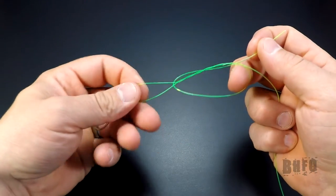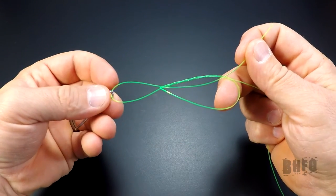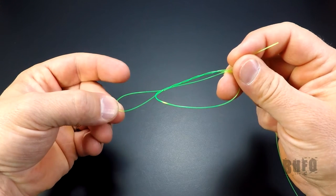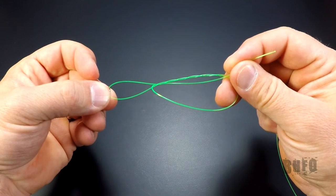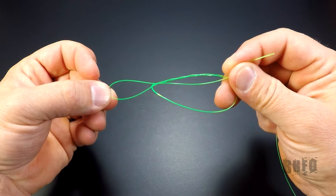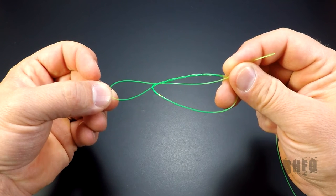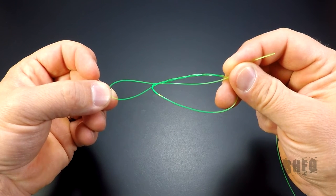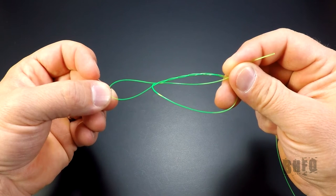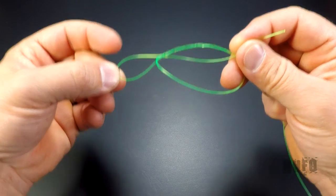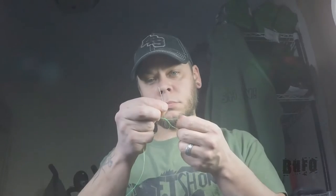Now it's very important when tying fishing knots to lubricate the line before cinching up. The reason is friction could cause line burn and weaken or damage the line, so always lubricate your knots. The best way is to run the knot through your mouth and use saliva.